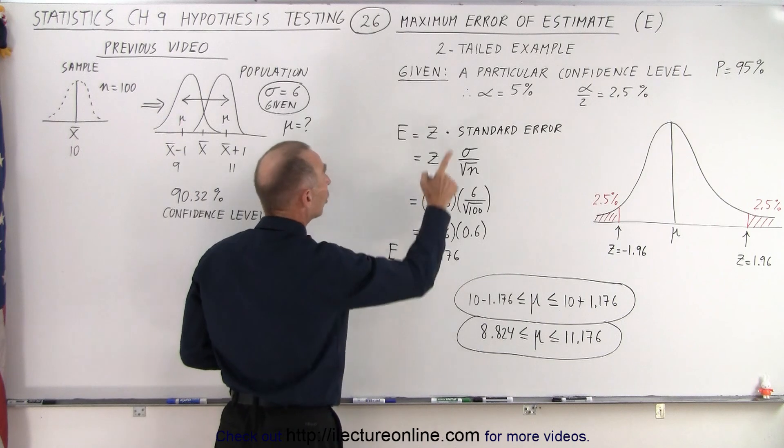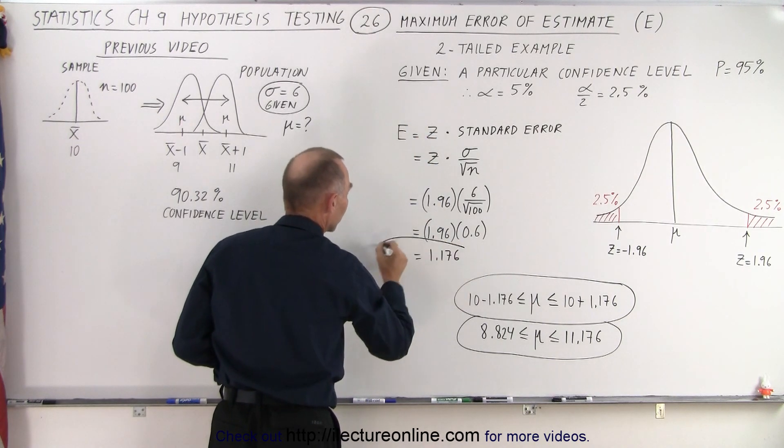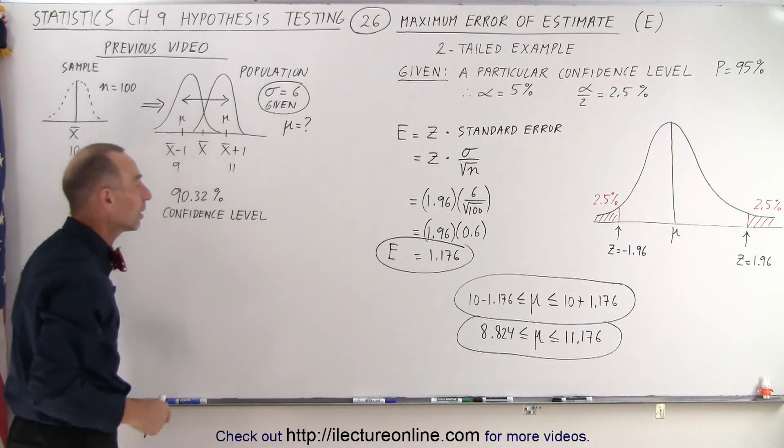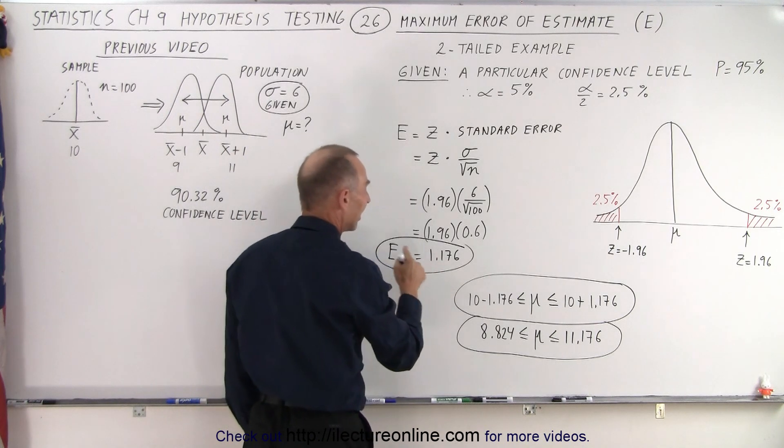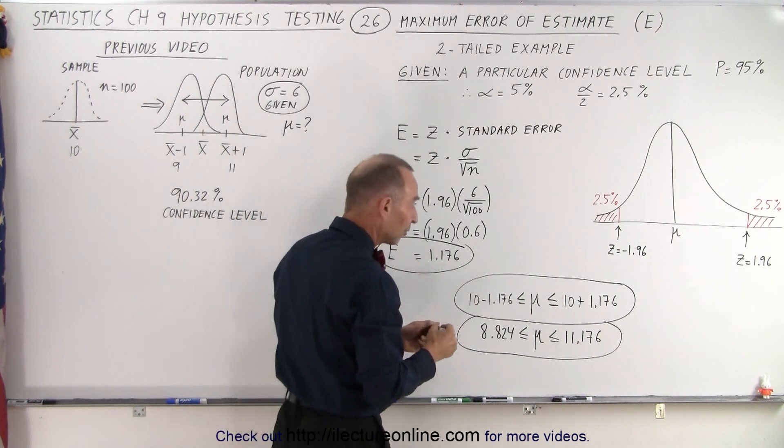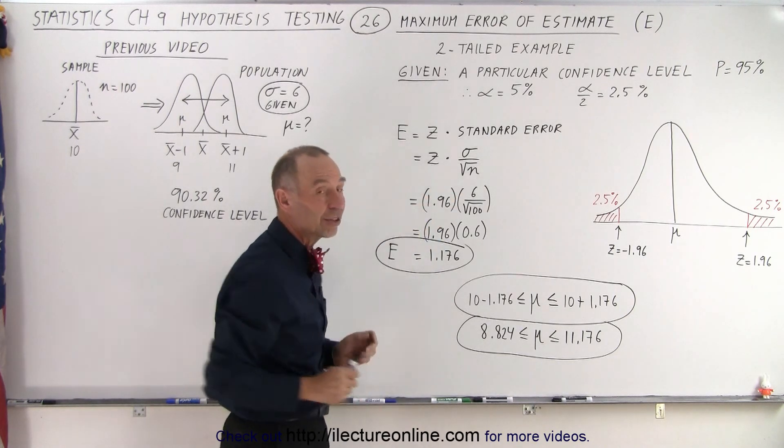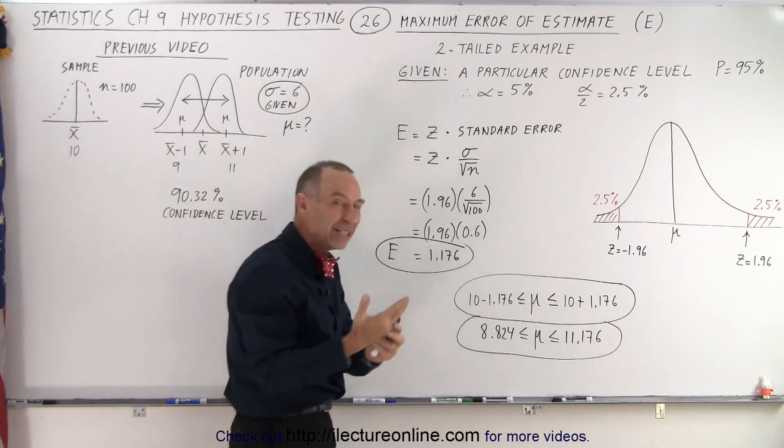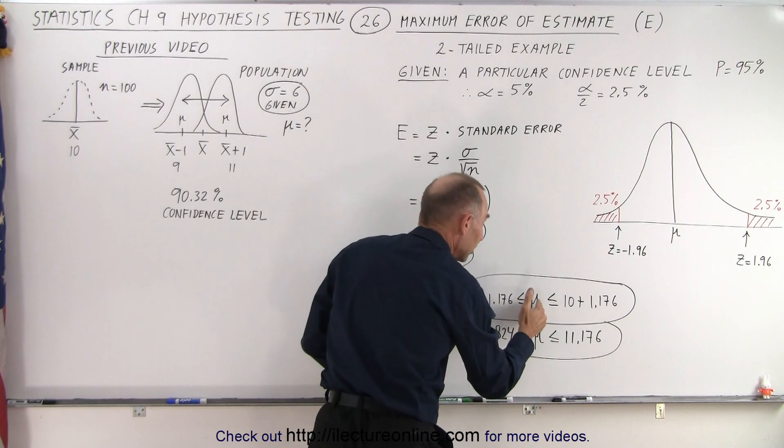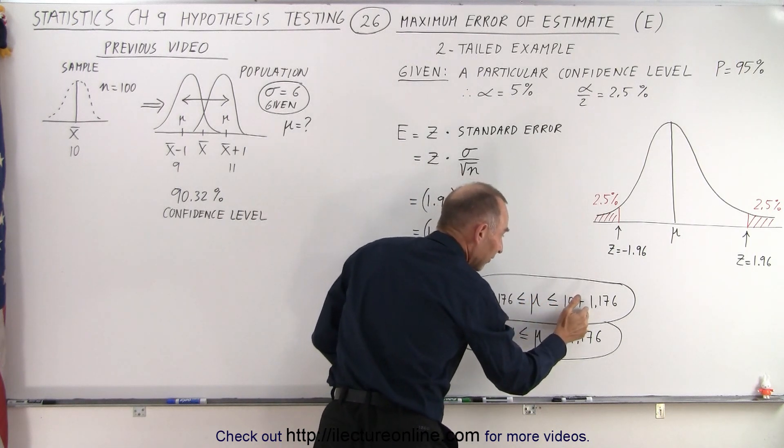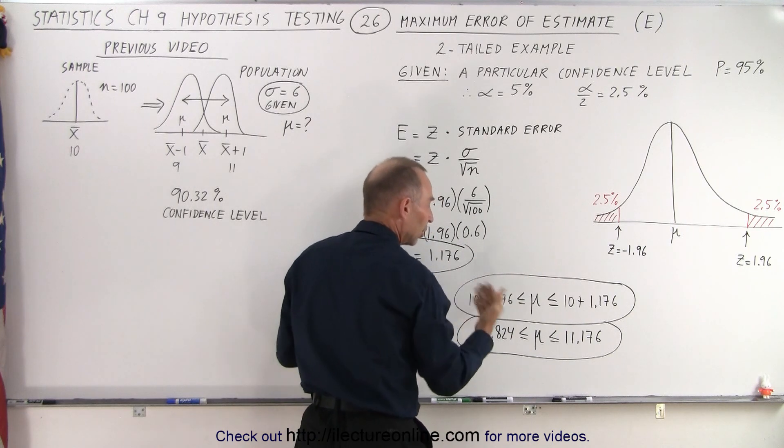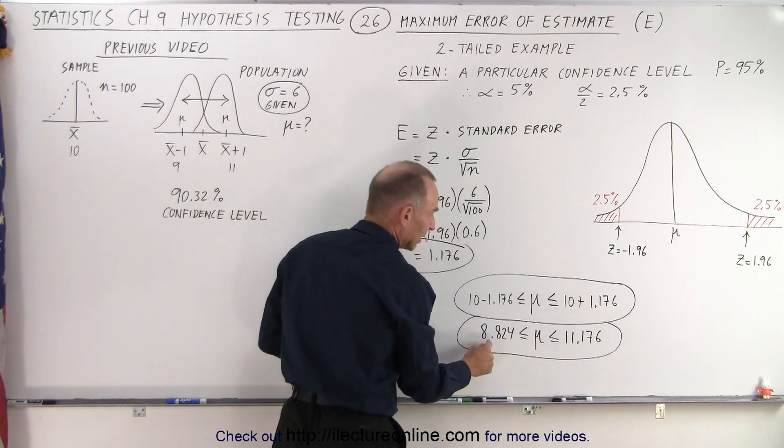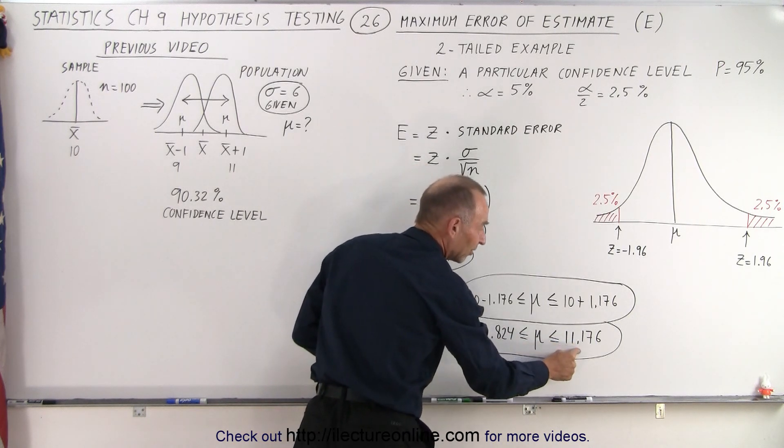This is what we call the maximum error of estimate. Notice that's a little bit bigger than the error of estimate we had before. We set it at plus 1 and minus 1. Here we set it at plus 1.176 and minus 1.176. So what we're saying is that at 95% confidence level, the sample mean represents the mean of the population plus 1.176 and minus 1.176.